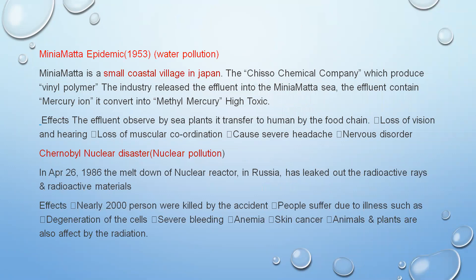Minamata is a case study about water pollution. Minamata is a coastal village in Japan where there was a Chisso chemical factory producing vinyl polymer. The factory's effluent waste was discharged into the sea, and when mercury came in contact with water, it converted into methylmercury — a highly toxic compound. Fish intake methylmercury through the water, and when humans consumed these fish through the food chain, they suffered diseases like loss of vision, loss of muscular coordination, severe headache, and nervous disorders. This shows how water pollution affects human beings.